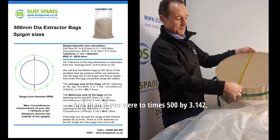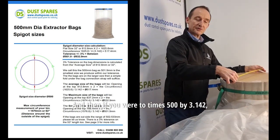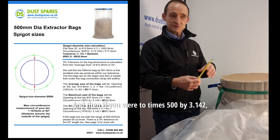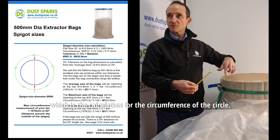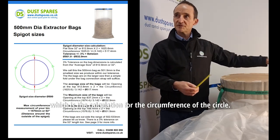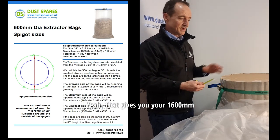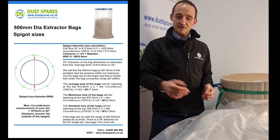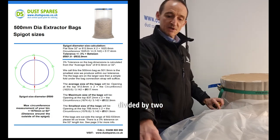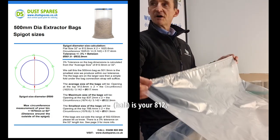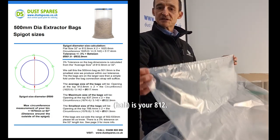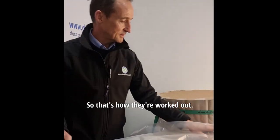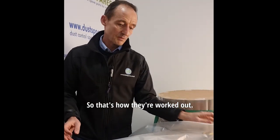And then if you times 500 by 3.142, which is the calculation for the circumference of a circle, that gives you 1600 millimeters, divided by two — half — is your 812. So that's how they work it out.